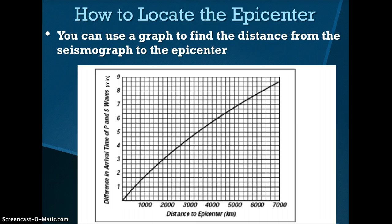Once you know the difference in arrival times, you can use a graph to help you find the distance from the seismograph station to the epicenter. In this graph, the difference in arrival times of P and S waves is plotted on the y-axis, and distance to the epicenter is plotted on the x-axis. Therefore, if the difference in arrival times of P waves and S waves at a specific seismic station is 7 minutes, then that seismic station would be located 5,200 kilometers away from the epicenter.